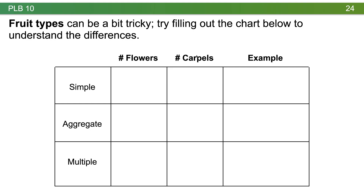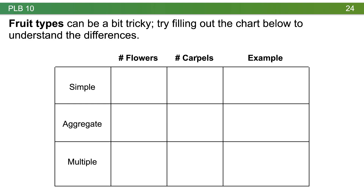In recent office hours, students have been asking about fruit types — it's easy to get confused between simple, aggregate, and multiple fruits. I've developed a chart to help people see the differences. Take a moment to see if you can fill it in yourself: for each type, identify how many flowers are involved, how many carpels, and give an example or two.